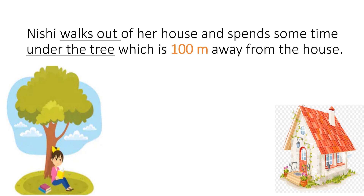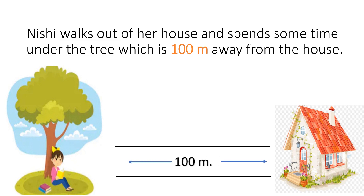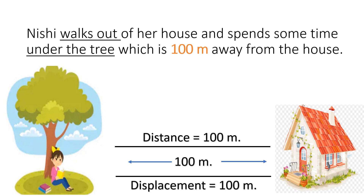Let's see the second condition. Nishi walks out of the house and spends some time reading a book under the tree. Here, both her distance and displacement are one and the same — that is 100 m. So that proves the second condition: the magnitude of distance and displacement can be equal.